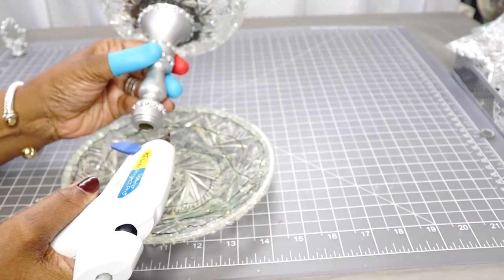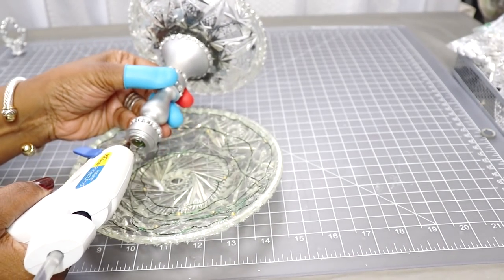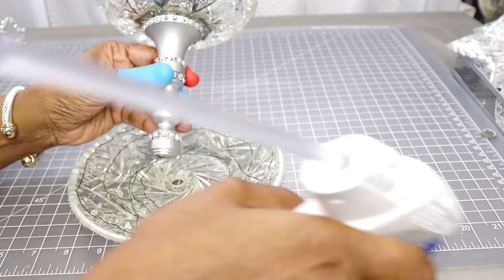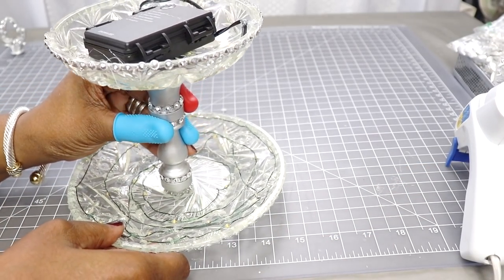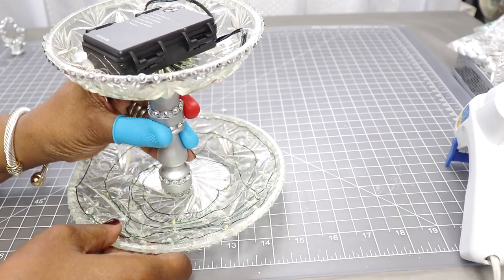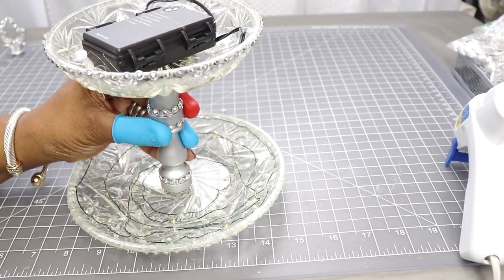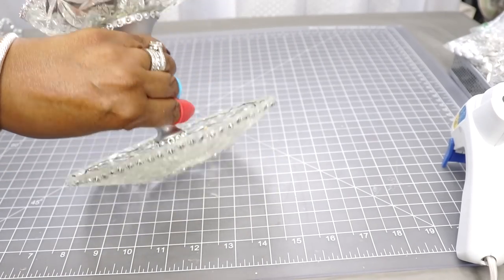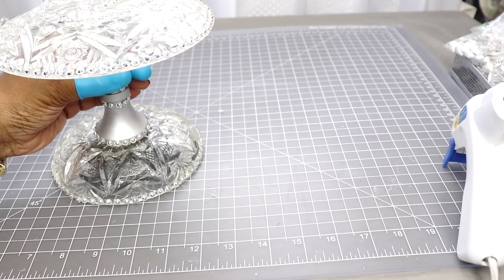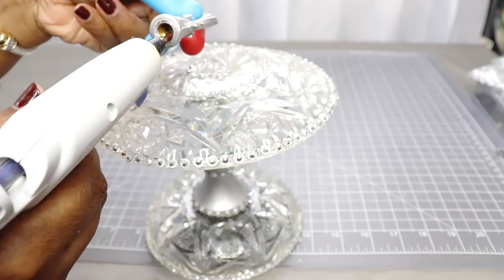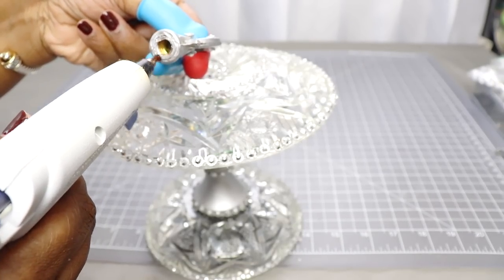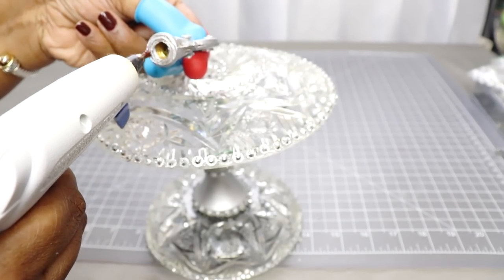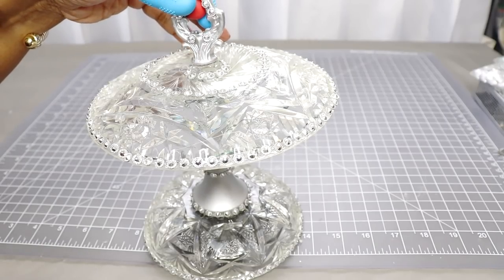So now it's time to hot glue the top part of the base to the lamp. And guys, if you wanted to you can definitely use permanent glue to assemble this project if you wanted to recreate it. I'm just using hot glue today just to show you how I did this. And so now I'm attaching the finial.